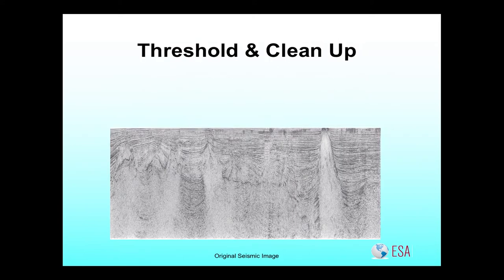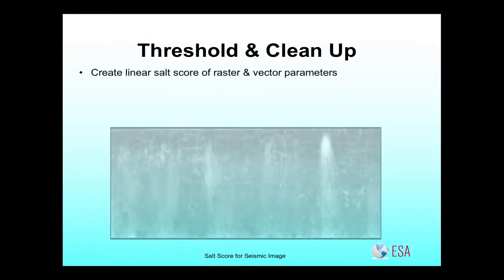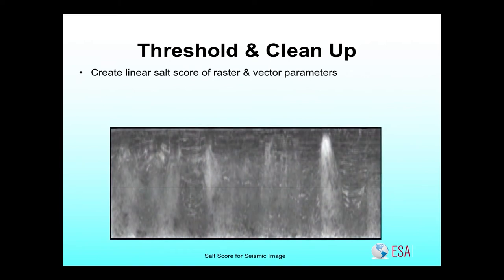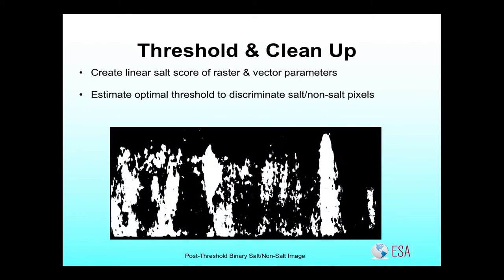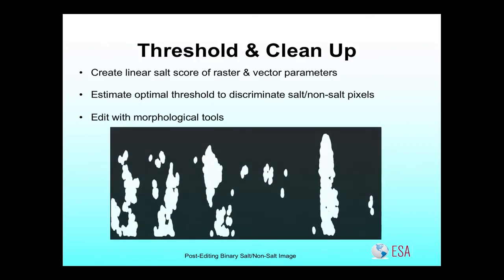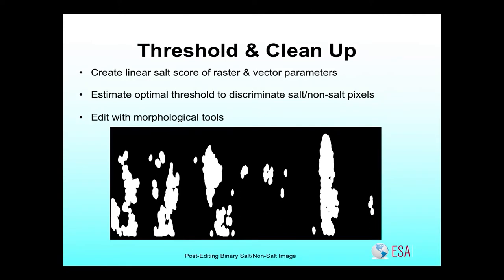We want to create a threshold function to clean up what we've done. This is the original seismic image; this is the thresholding of those six parameters — four raster and two vector. We use an algorithm from a researcher named Otsu from about 30 years ago — in fact, we use it so much that Otsu is a verb for us. Here is the result of the two-state classification: seismic salt versus non-salt. It's a pretty messy image, but there are good morphological tools for making those shapes much more geologically palatable.